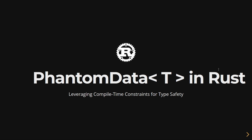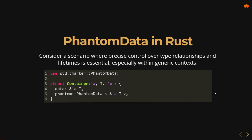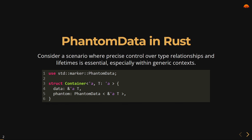Let's explore some example code. In this Wrapper, a generic struct containing data of type T, the marker field of type PhantomData signals the presence of type T without introducing any runtime overhead, enabling sophisticated type manipulation within a generic context.